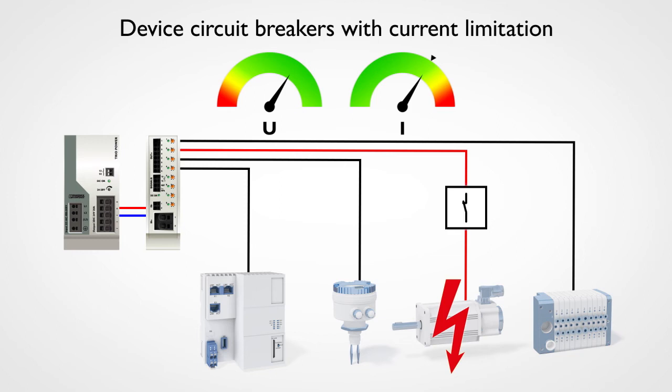Nevertheless, the device circuit breaker trips after a defined time, thereby disconnecting the faulty branch from the supply. In the case of a temporary overload, for example, due to an electric motor starting up, the device circuit breaker enters current limitation mode, but does not trip. It then returns to the normal operating state after the overload event has passed. The system continues running as before.